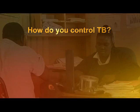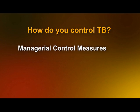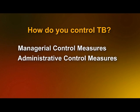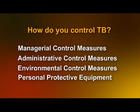To control TB, there are four types of infection control measures: managerial control measures, administrative control measures, environmental control measures, and personal protective equipment, or PPE. Remember, whatever your role in the clinic, you're critical in carrying out these TB infection control measures.